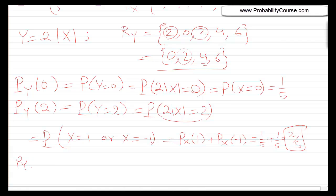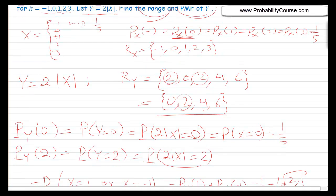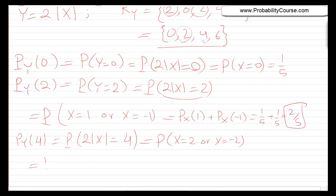How about py of 4? This is the probability that Y equals 4, meaning 2 times the absolute value of X equals 4, which is the same as the probability that X equals 2 or X equals minus 2. But X cannot be minus 2, since the possible values of X were only minus 1, 0, 1, 2, and 3. So this is just the probability that X equals 2, which is 1 over 5. Similarly, py of 6 equals 1 over 5.